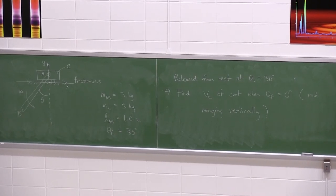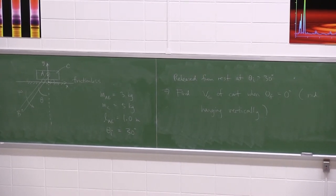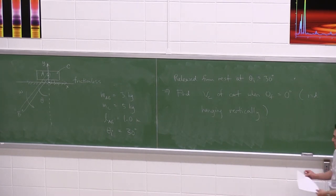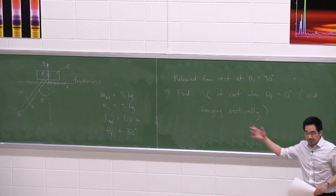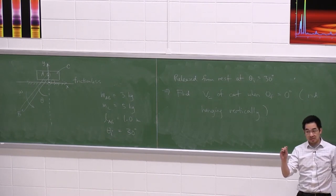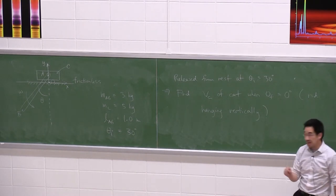All right, so let's do one. This is our final example of our combined look at chapters 17, 18, and 19 — energy, momentum, F equals MA, and rigid bodies. I put a problem on the board that looks at using several of those concepts together in the same problem.